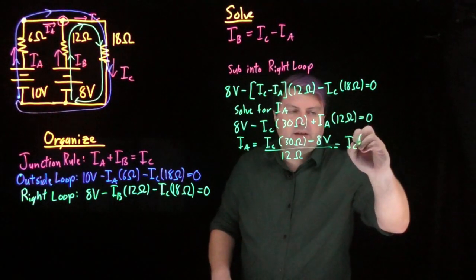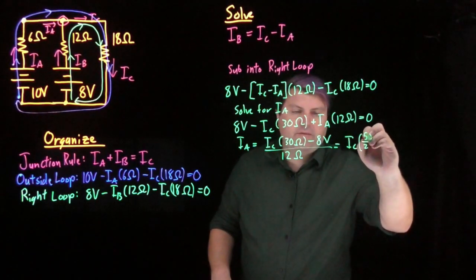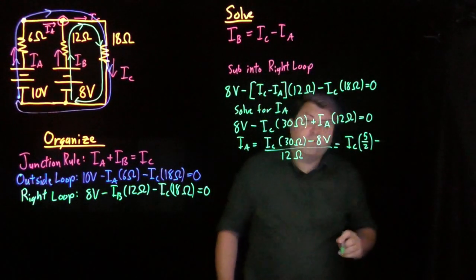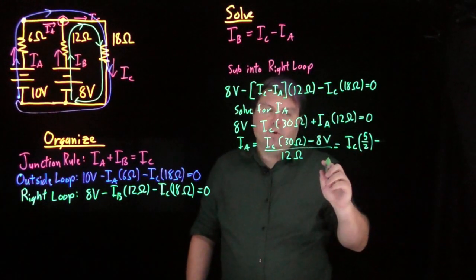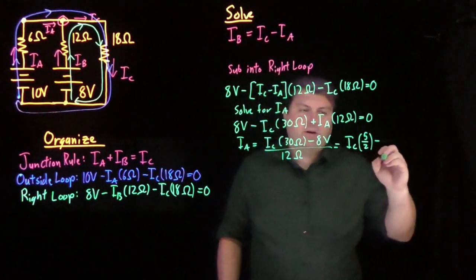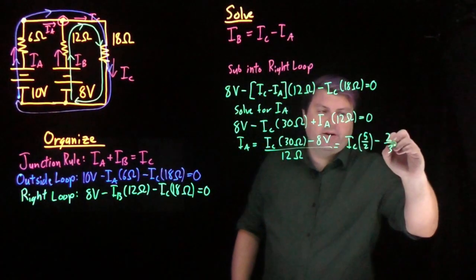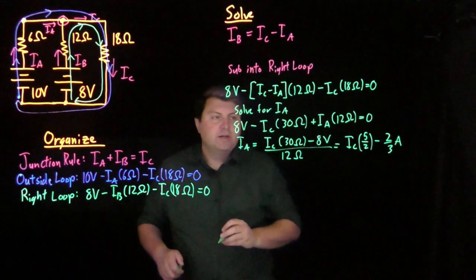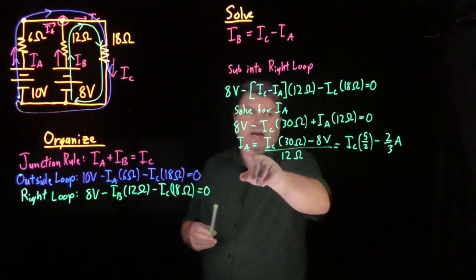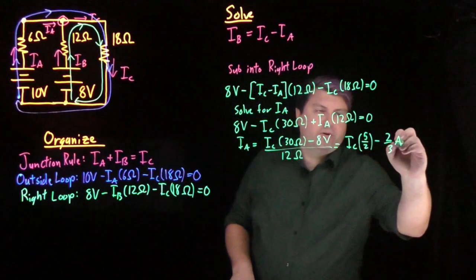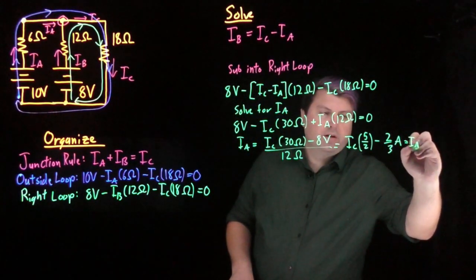This gives me Ia equals Ic times 30 ohms minus 8 volts, and then I'm dividing all by 12 ohms. So 30 divided by 12 have a common factor of 6, so I have Ic times 5 halves. 8 divided by 12 has a common factor of 4, so minus 2 thirds of an amp. So now I have that my Ia is equal to Ic times 5 halves minus 2 thirds amps.